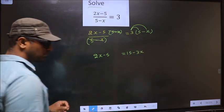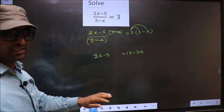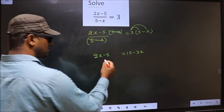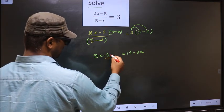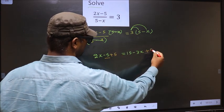Now you should put all the x terms on one side and the numbers on the other side. What I mean is, minus 5 should not stay on this side. So to remove minus 5, you add 5 on both sides.